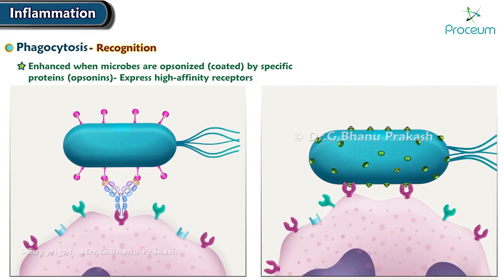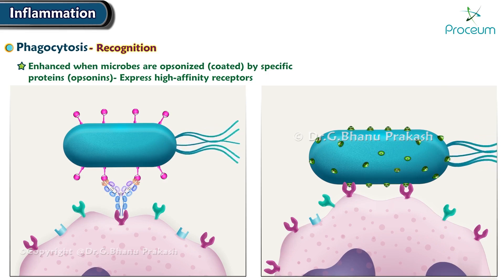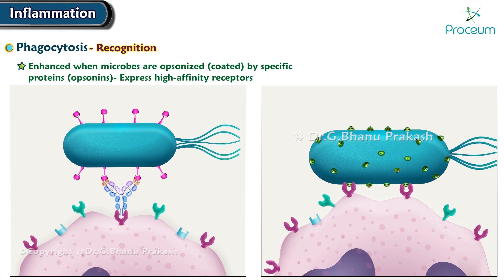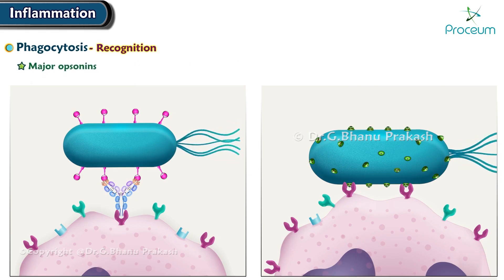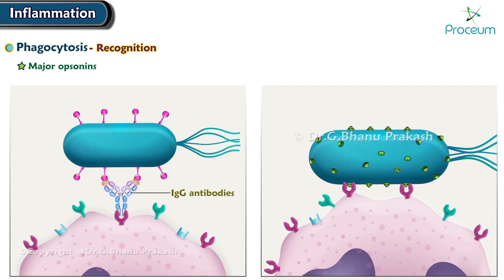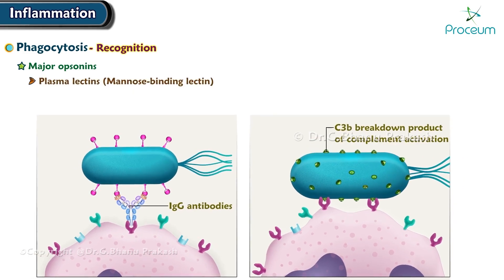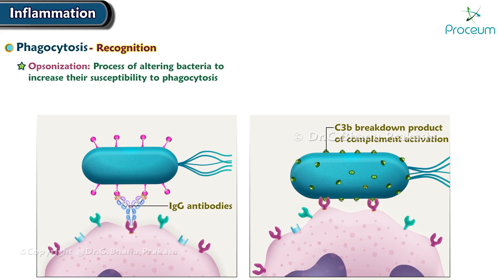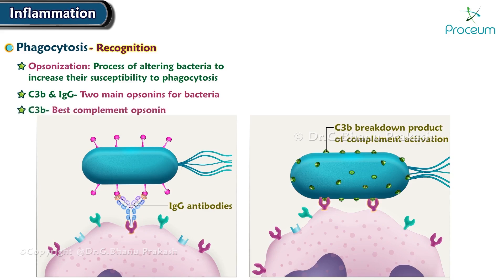The efficiency of phagocytosis is greatly enhanced when microbes are opsonized — that is, coated by specific proteins called opsonins — for which the phagocytes express high affinity receptors. The major opsonins are immunoglobulin G antibodies, the C3b breakdown product of complement activation, and certain plasma lectins, notably mannose-binding lectin, all recognized by specific receptors on leukocytes. Opsonization is the process of altering bacteria to increase their susceptibility to phagocytosis. C3b and IgG are the two main opsonins for bacteria, and C3b is the best complement opsonin.